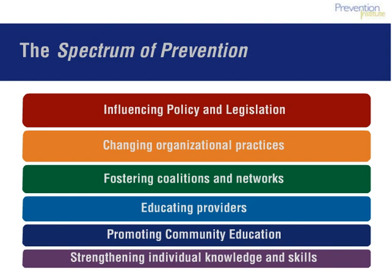In this module, we will use what we learned about community factors and apply it to the Spectrum of Prevention. The Spectrum of Prevention is a framework that includes six strategies. Each strategy is named in a colored band above. Together, these strategies can be part of a single, comprehensive effort to address significant health and safety concerns. Activities under each strategy should support one another in a unified approach. Follow along as we go through each strategy and see examples of how they have been applied.